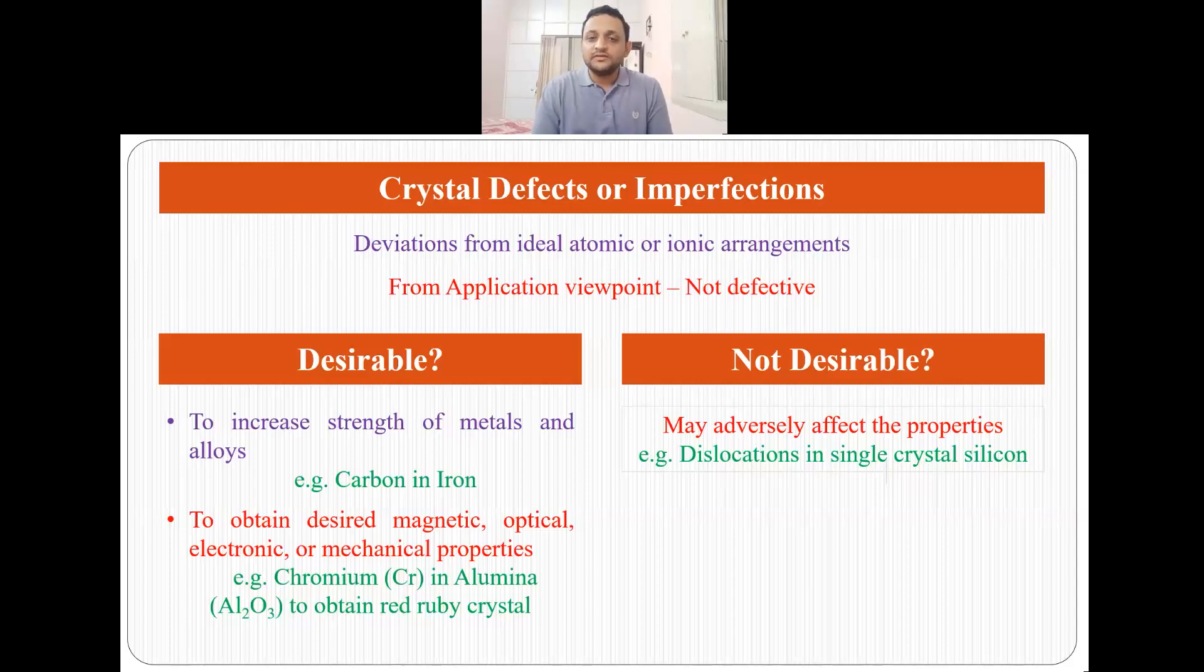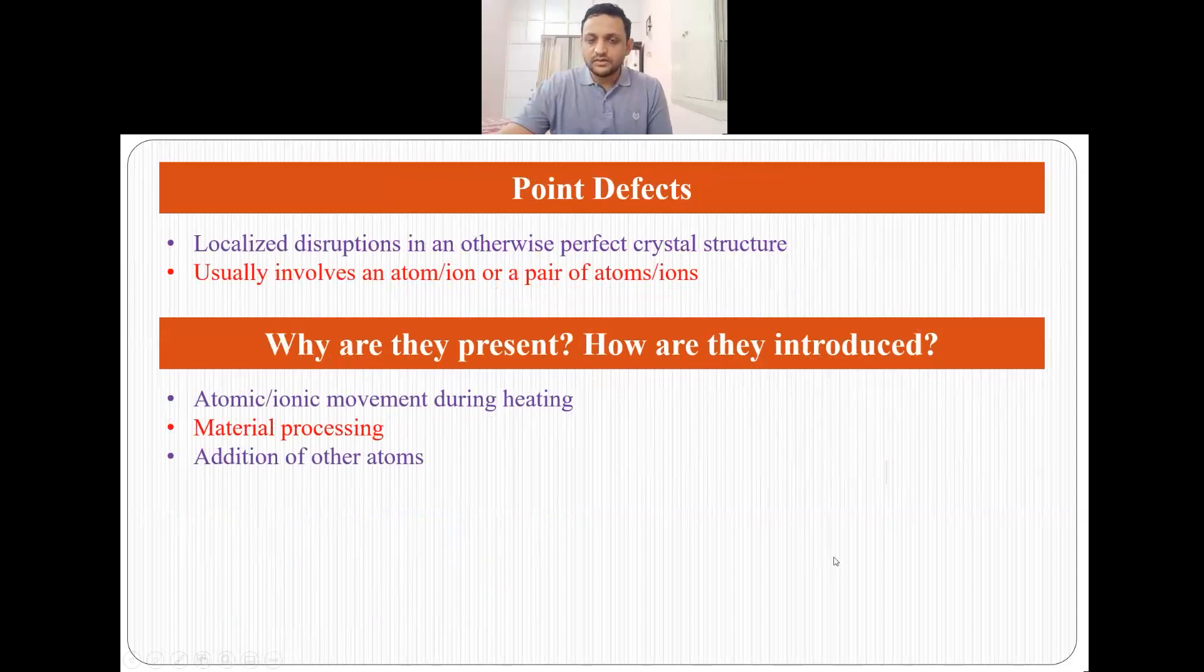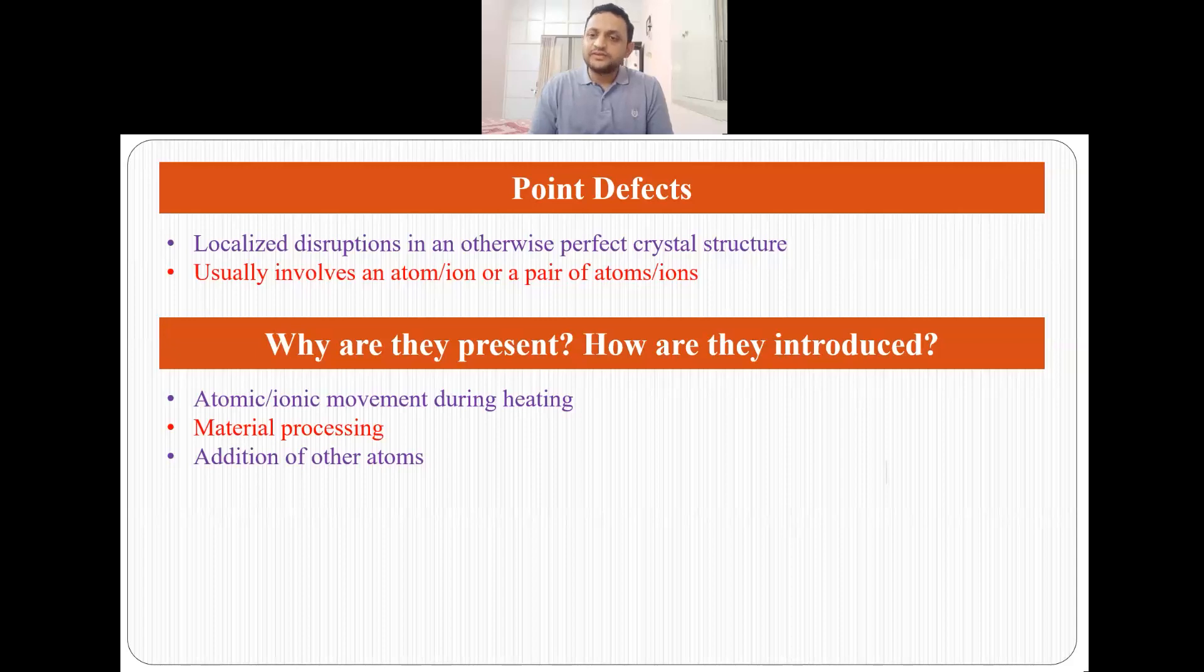Now what are point defects? In a perfect crystal structure, if there is some movement of atom or ion or a pair of atoms and ions, and because of this movement there is a localized disruption, then we say this is a point defect. The localized disruptions in an otherwise perfect crystal structure is what we mean by point defects, and this usually involves an atom or ion or a pair of atoms or ions.